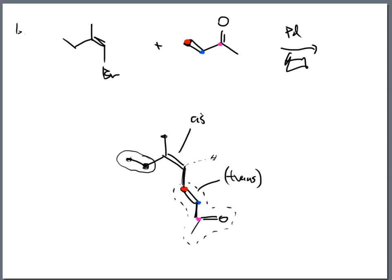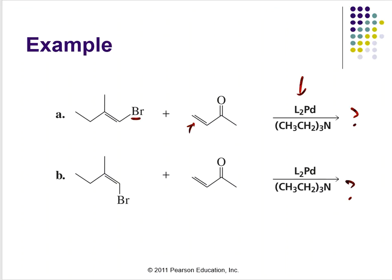So stereochemistry — I do have to keep that in mind. If the existing bond was cis, I keep it cis. If it was trans, I keep it trans on the halogen side. Whatever was there before I don't change. But it's this new incoming bond — that alkene — that I do want to pay special attention to, and I want that to be in the trans notation when I can.